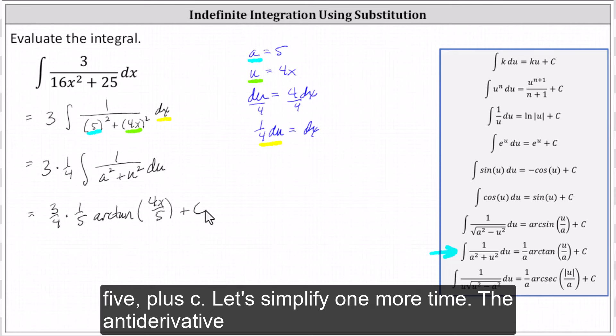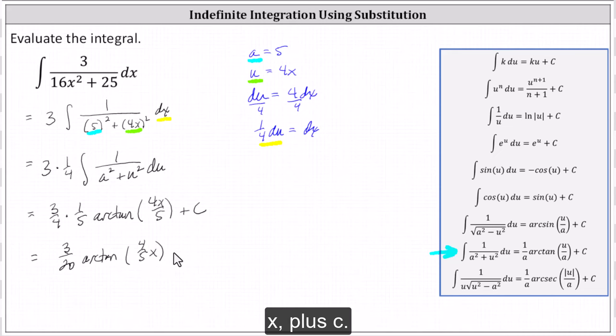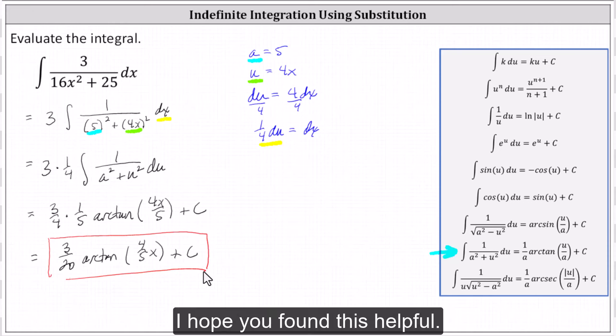Let's simplify one more time. The antiderivative is three-twentieths times arctangent of four-fifths x plus c. I hope you found this helpful.